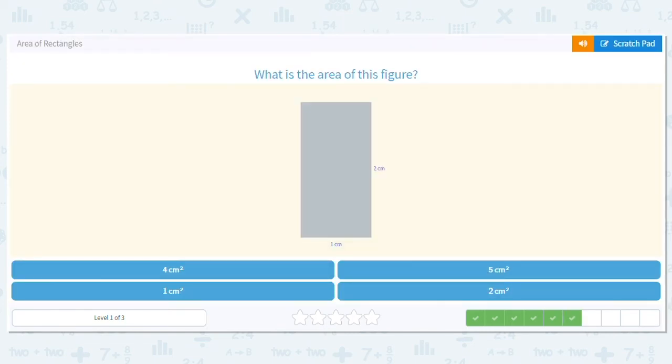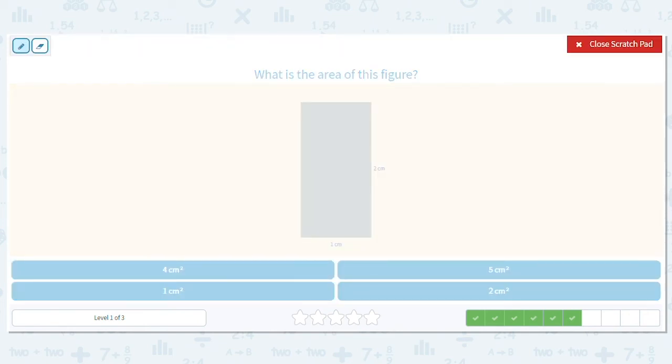Next up, we have another rectangle. One side. The long side is two centimeters. Short side is one. What's my multiplication problem? Two times one. What is two times one? Two.